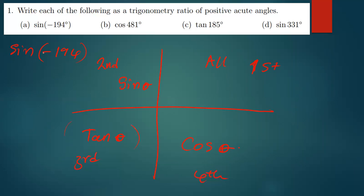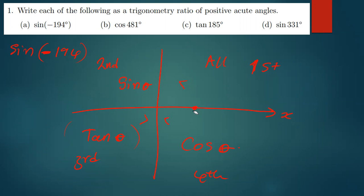When you have a negative angle like this, it means we measure angles starting from the positive x-axis going anticlockwise. So whenever you see a negative in front, that means we're going to measure in the opposite direction — instead of going anticlockwise, we start from the positive x-axis and go the other side, measuring the angle the negative way.